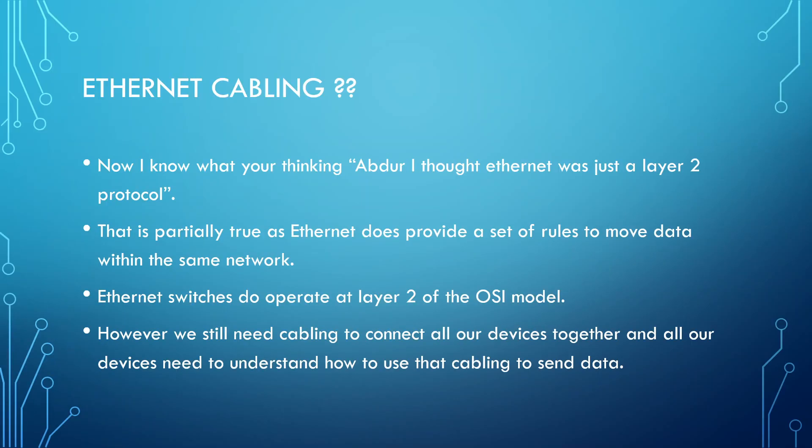I know what you're thinking at the moment — 'I thought Ethernet was just a layer 2 protocol, that's what you told us in your other video.' Well, primarily Ethernet does operate as a layer 2 protocol. We look at it as a layer 2 protocol because it allows for layer 2 communications, but it also defines the layer 1 — the actual physical cabling, how we take that data and put it onto the wire, how we send those bits over the wire. But primarily it's described as a layer 2 protocol, because Ethernet switches operate at layer 2 and Ethernet defines a set of rules for how we move data within the same network. However, we still need to have this physical cabling to connect our devices together so they can use it to actually send the frames they need to send.